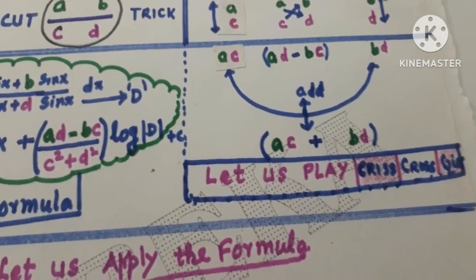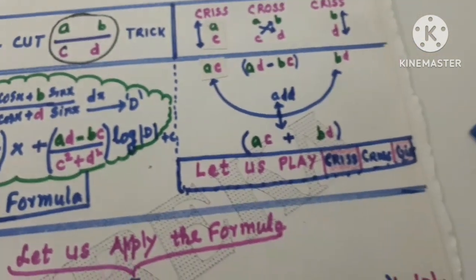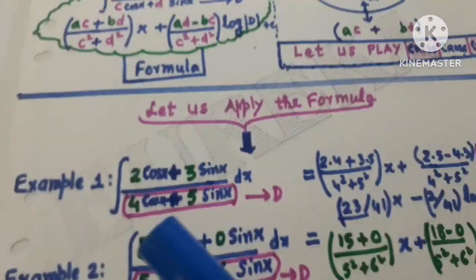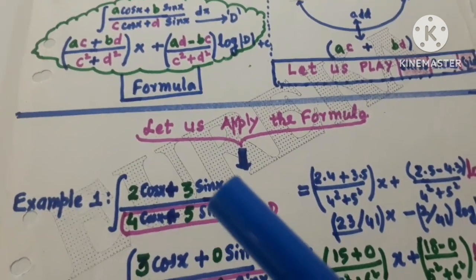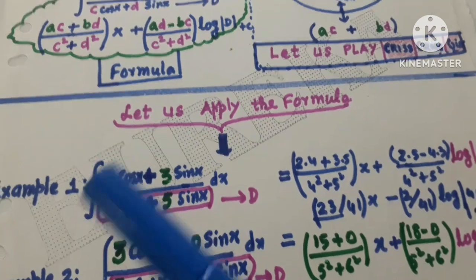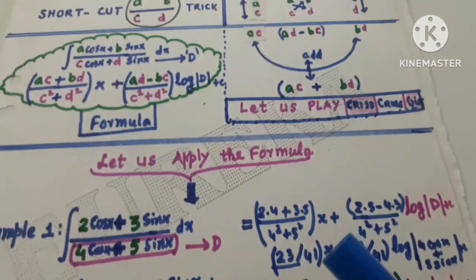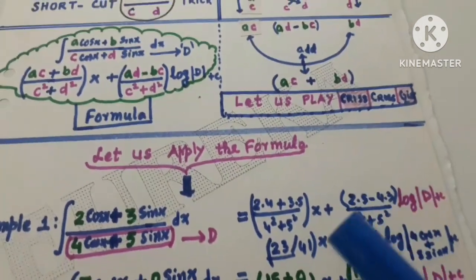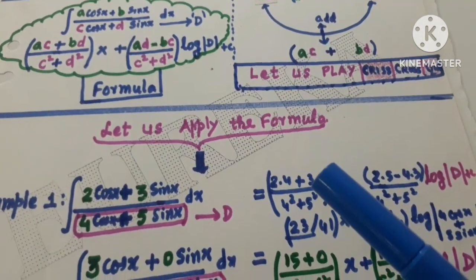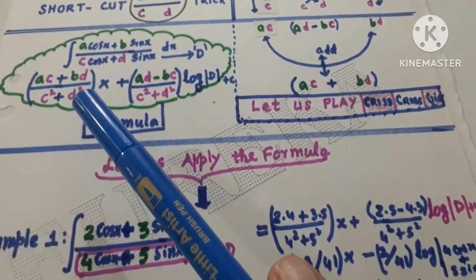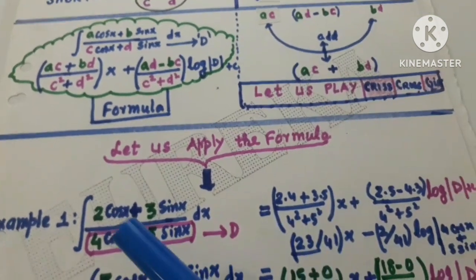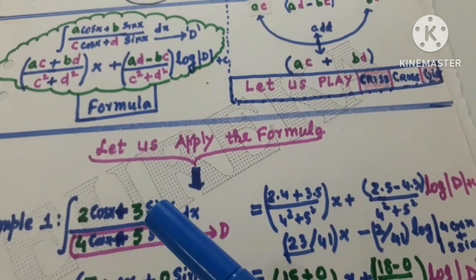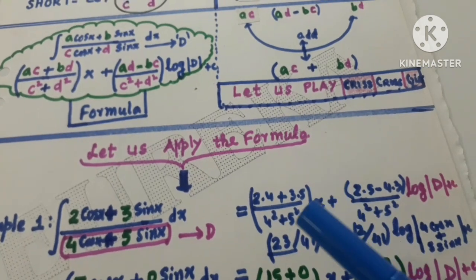Now let us go ahead with criss cross criss. Here is question: (2 cos x + 3 sin x) / (4 cos x + 5 sin x) — we have to find its integration. The answer will be (ac + bd)/(c² + d²). Here a is 2, c is 4, b is 3, d is 5. Just put it in.